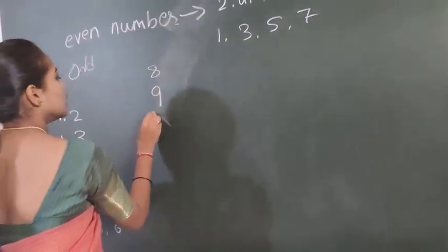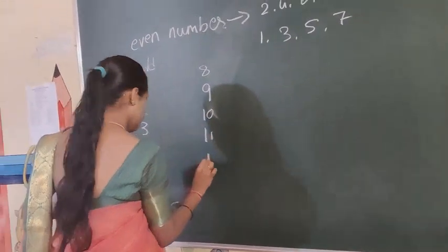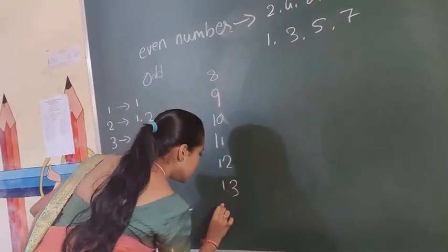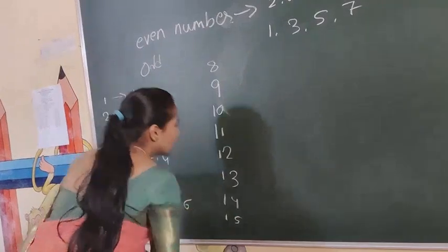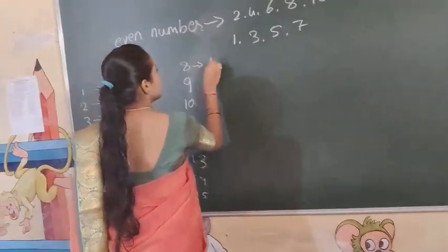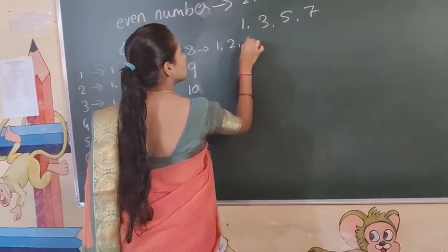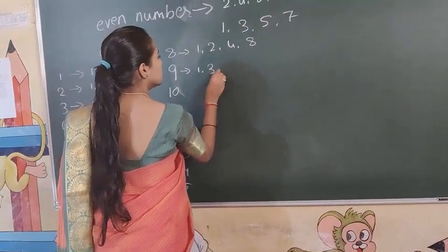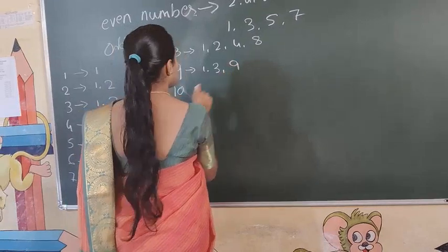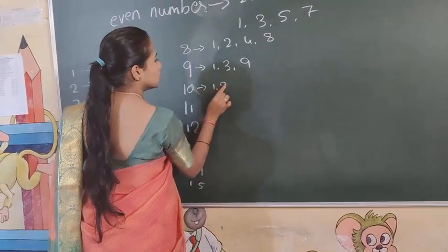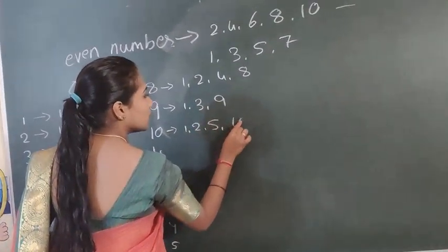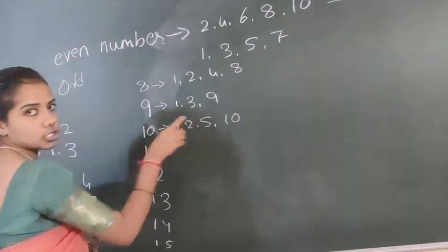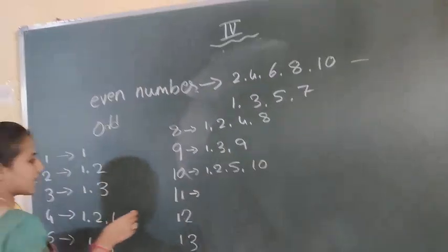Then 8, 9, 10, 12, 14, 15. Eight is 1, 2, 4, 8. Nine is 1, 3, 9. Ten is 1, 2, 5, 10. These are the factors, number factors.